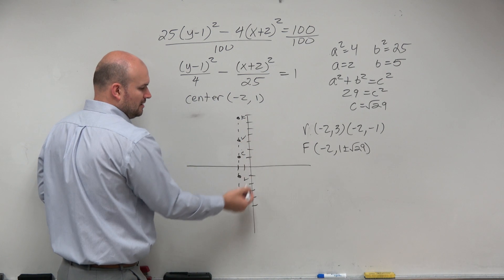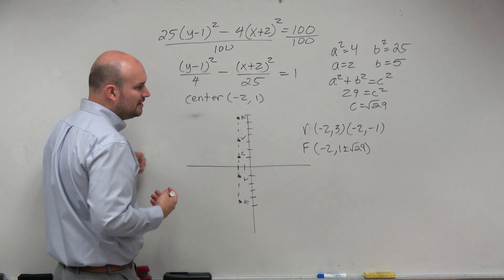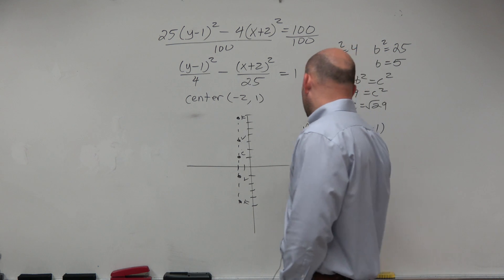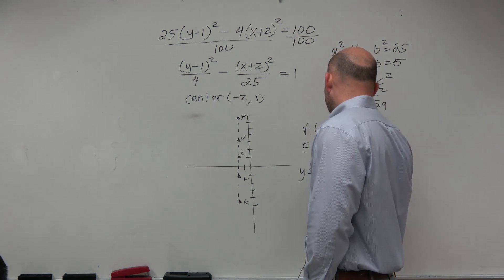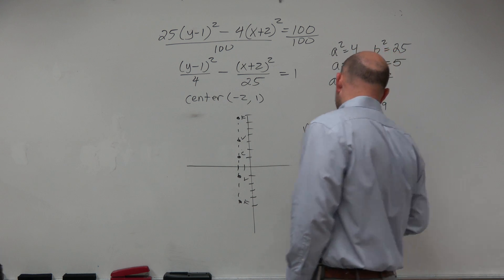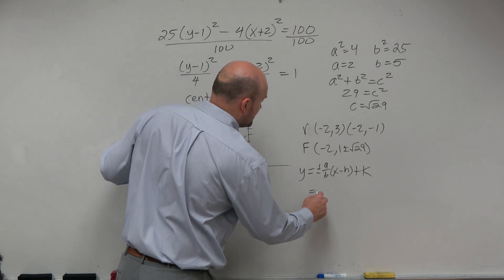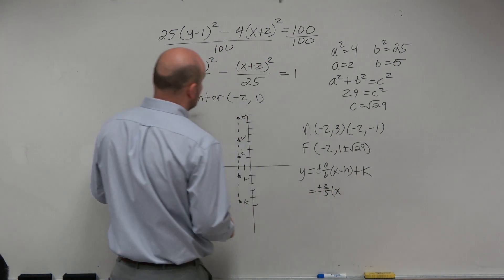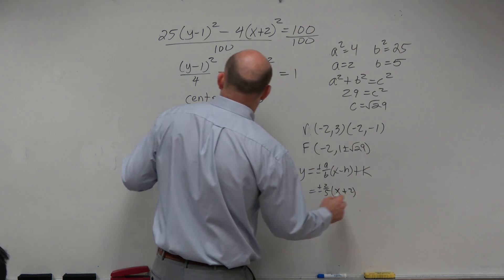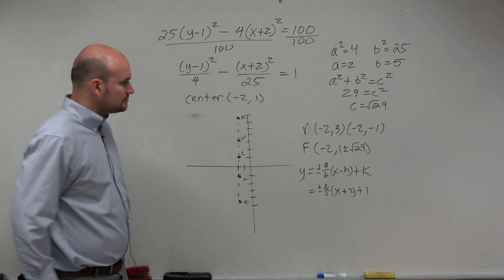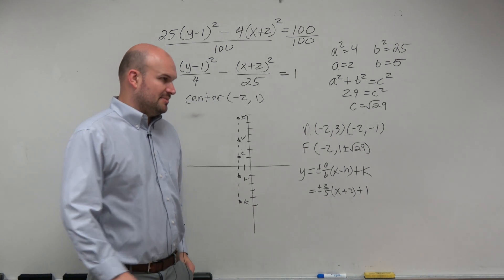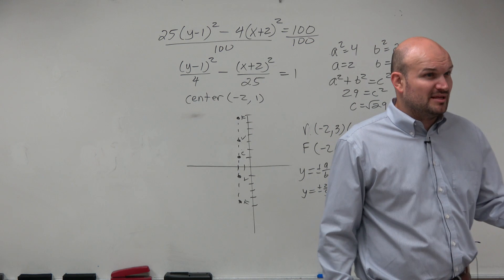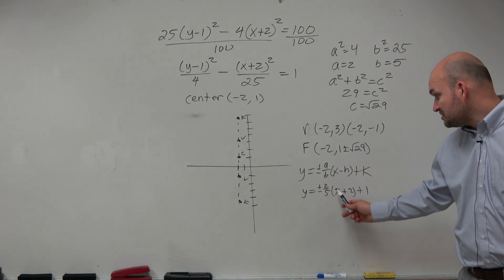Our hyperbolas are opening up and down. What we want to do is identify the asymptotes before sketching them. The asymptote for a vertical hyperbola has the equation y equals plus or minus a over b times the quantity x minus h, plus k. So for this, I just plug in the numbers: a is 2, b is 5. So I have plus or minus 2/5 times x minus h, which is plus 2, and then plus k, which is 1. Trying to graph that isn't really going to be fun because you'd have to distribute the 2/5 to the x and to the 2, then combine to get a y-intercept.